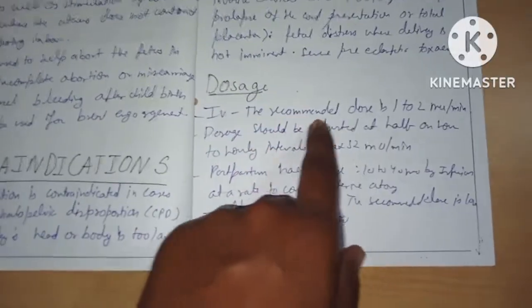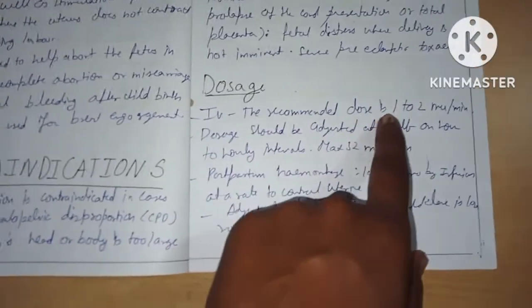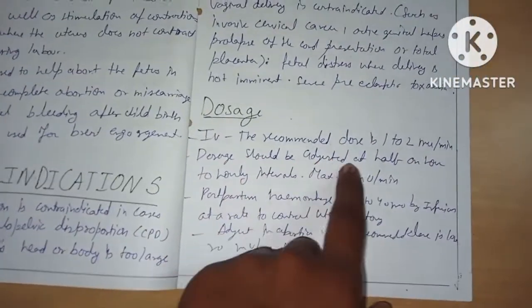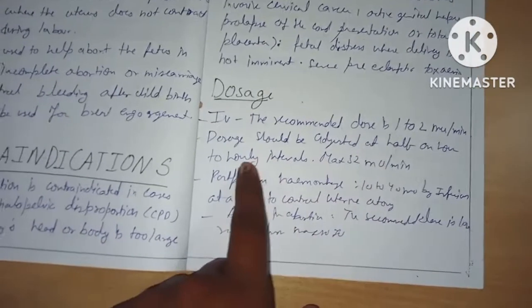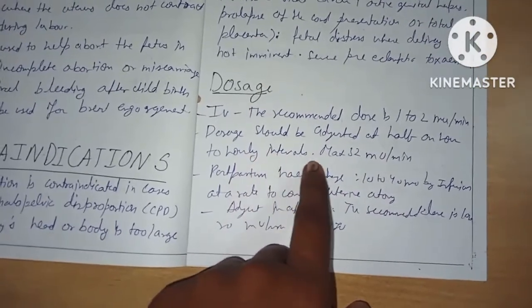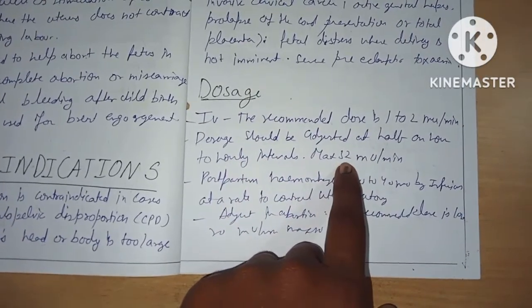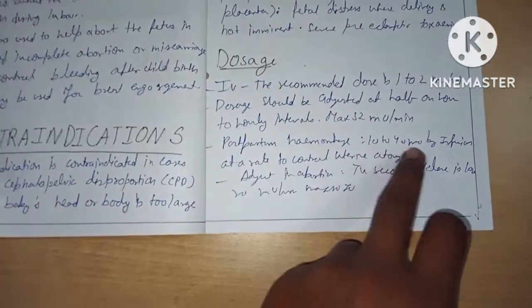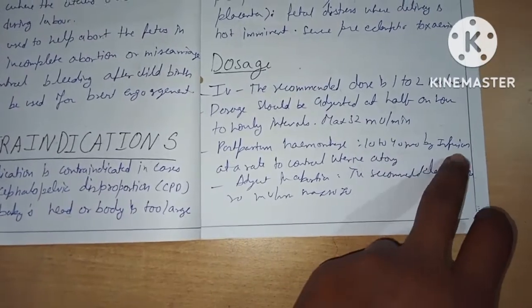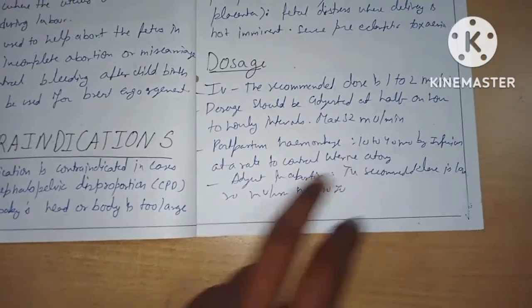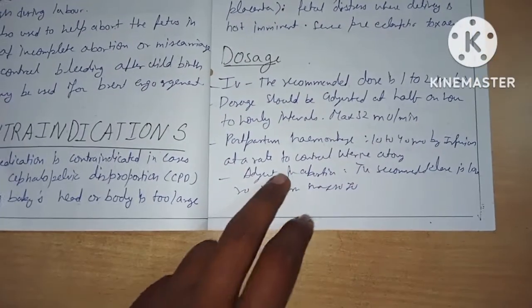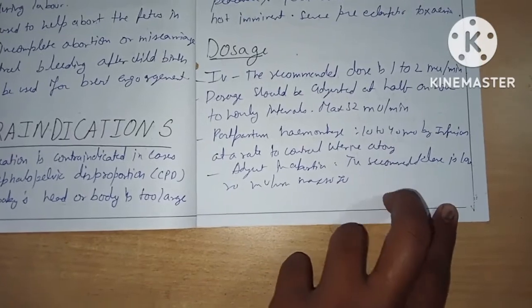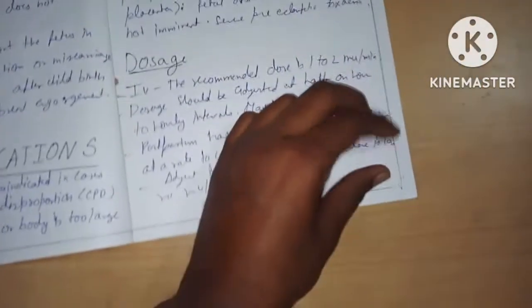Dosage: the IV recommended dose is 1 to 2 milliunits per minute. Dosage should be adjusted every half hour; maximum is 30 milliunits per minute. For postpartum hemorrhage, 10 to 40 units by IV infusion adjusted to the rate of uterine contraction. For adjunct in abortion, the recommendation is 10 units.